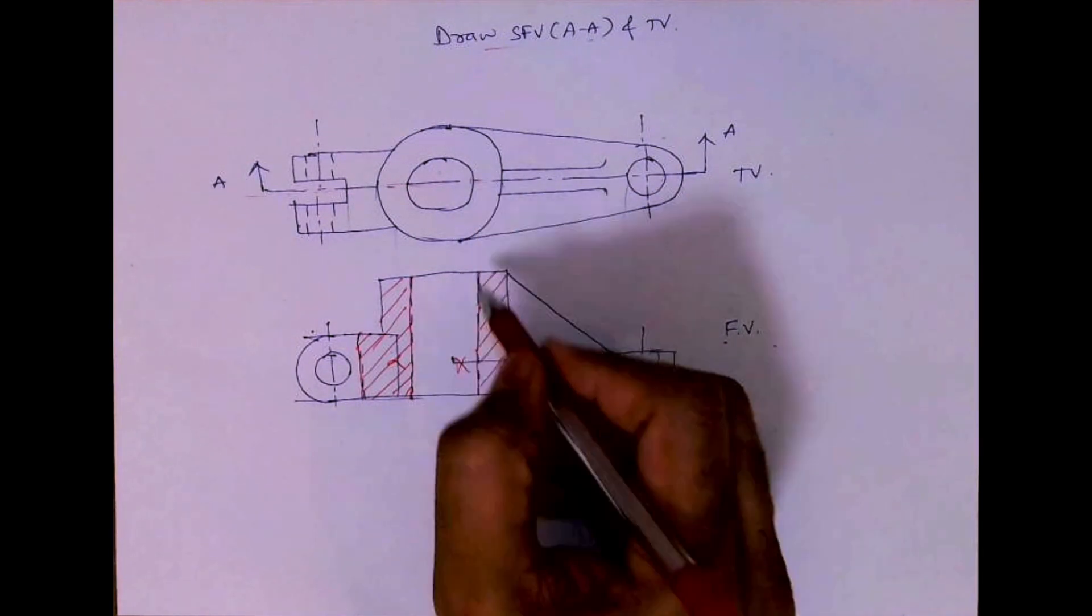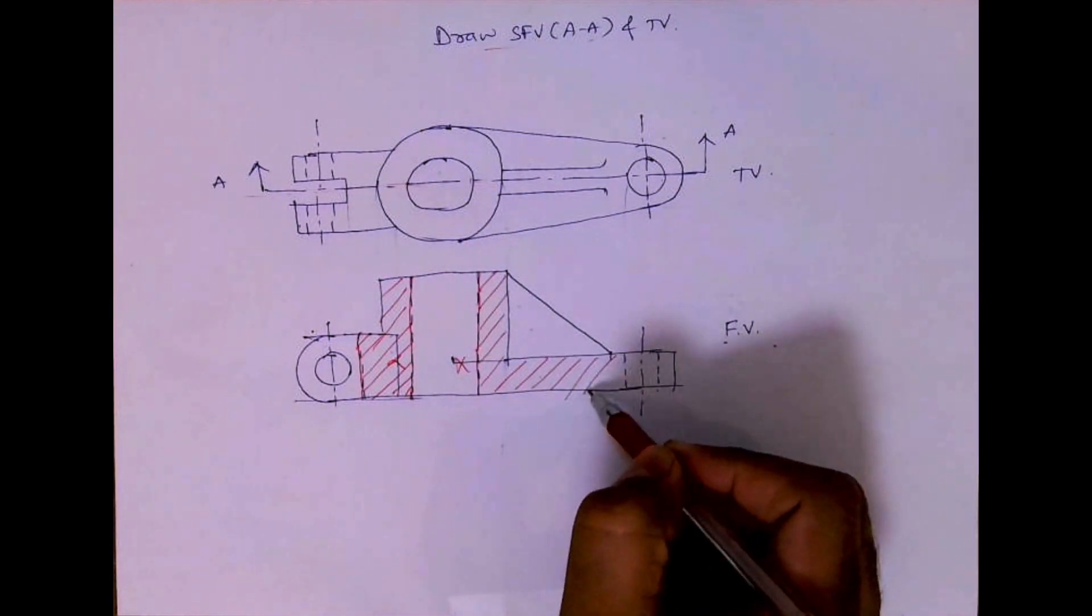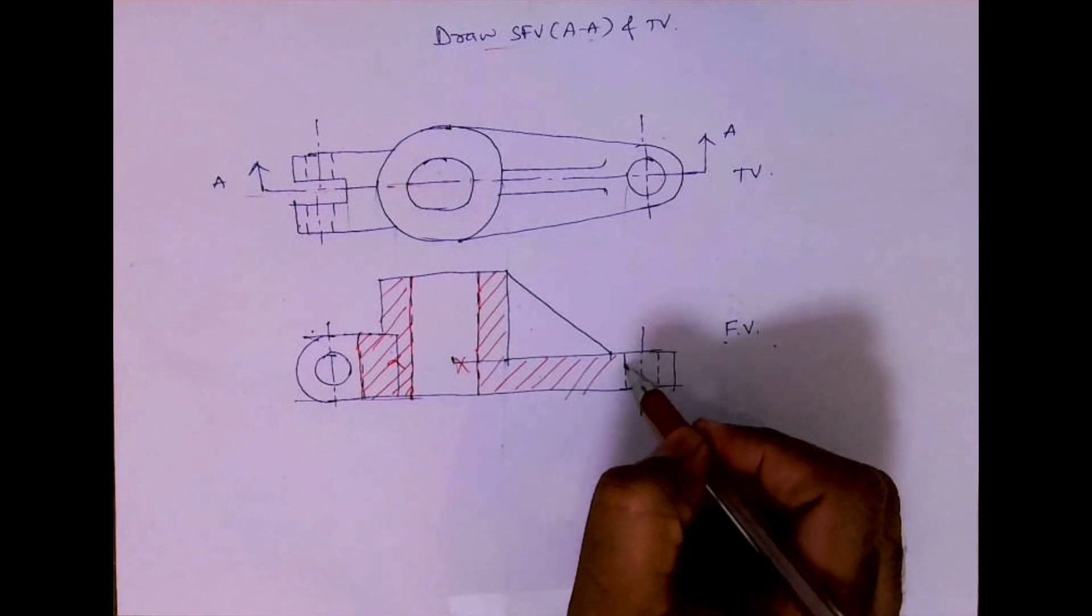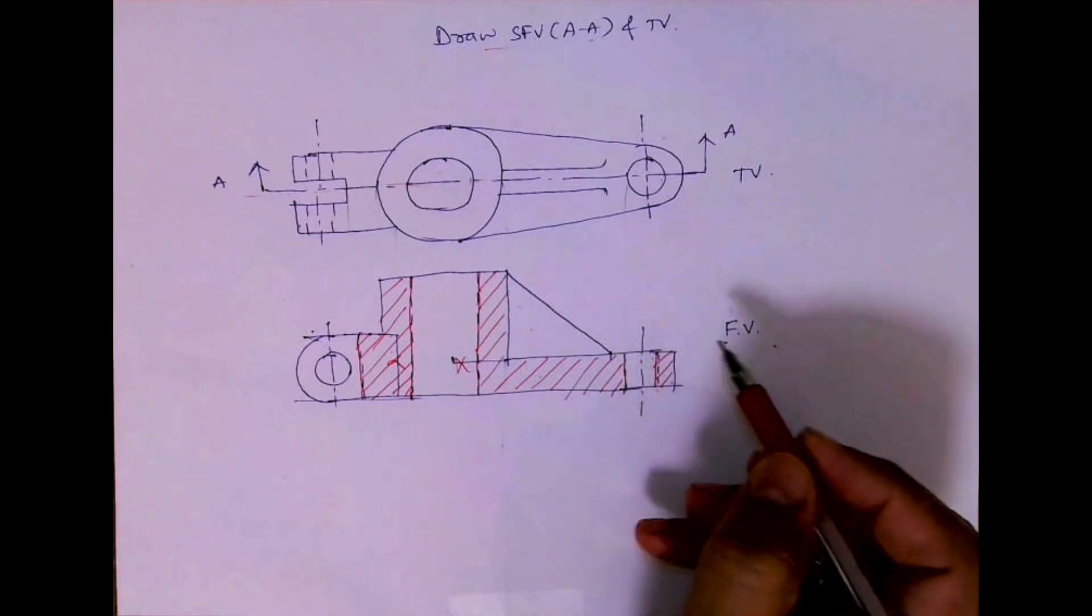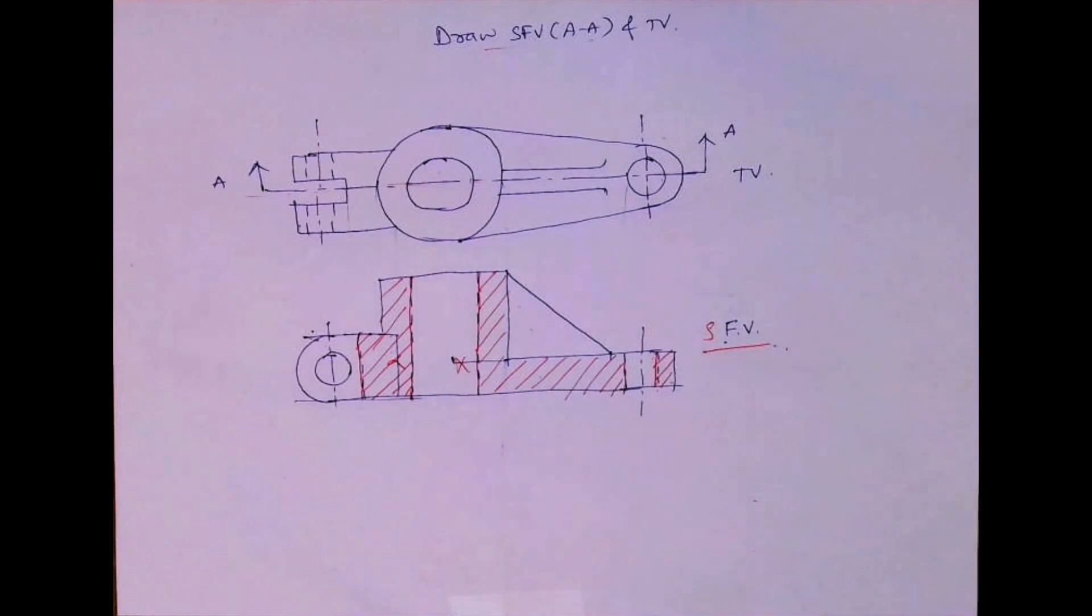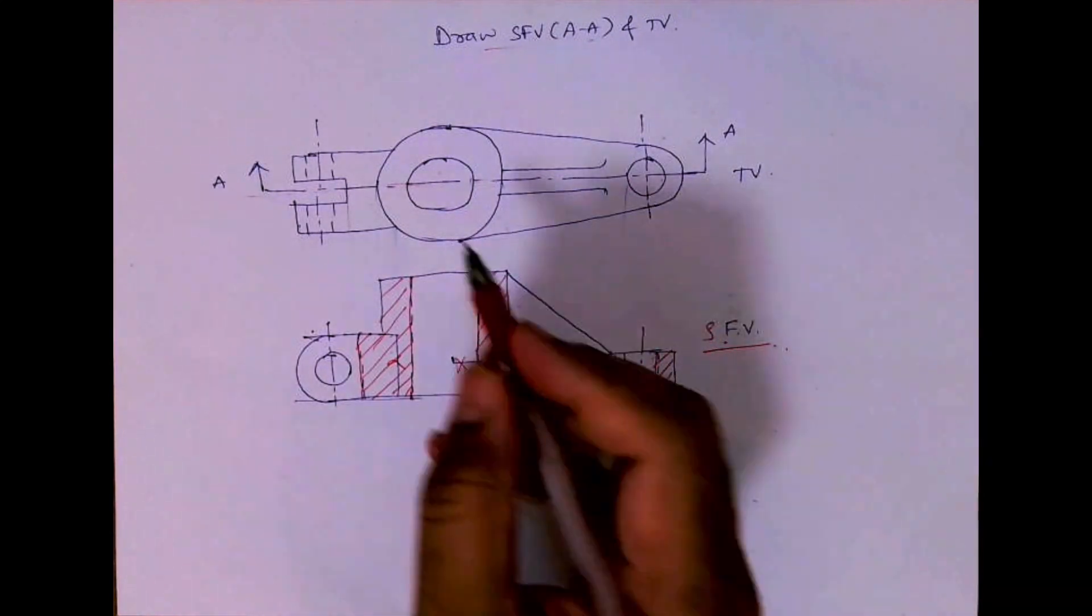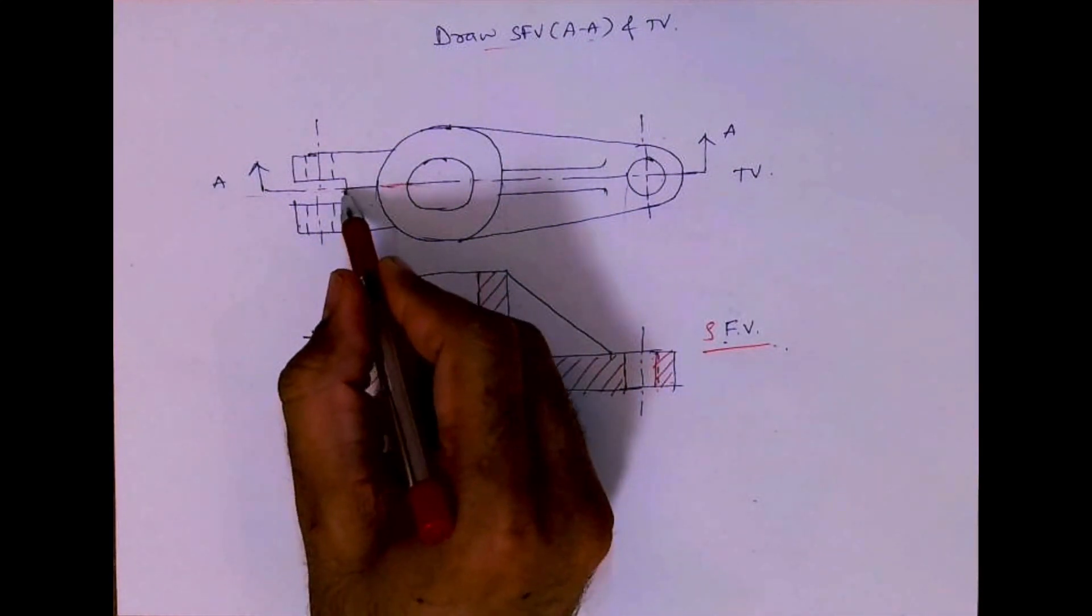Out of these two, this is a lower portion, minimum area, so that will be hatched. This dotted will become solid and this will be hatched like this, so it will become sectional front view. See, this is getting cut.